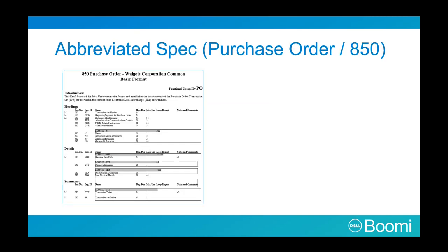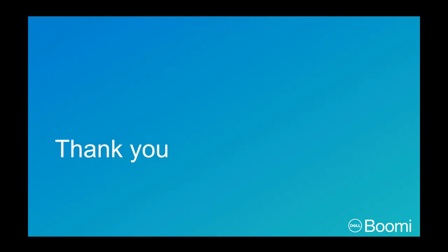This is a shortened version of an X12 850 spec displaying a sample segment. It contains three areas: heading, detail, and summary. Reading from left to right, it displays an M if the segment is mandatory, the position number, the segment ID, the name, whether it's required (M) or optional (O), the maximum number of times used, the number of times a loop repeats, and some notes and comments. When you move to our EDI Basics class, you will see how to use this spec and your sample file to create an X12 850 EDI transaction. This concludes our EDI Fundamentals class. After reviewing the questions, you will move on to the EDI Basics class where you will learn how EDI works with Boomi.